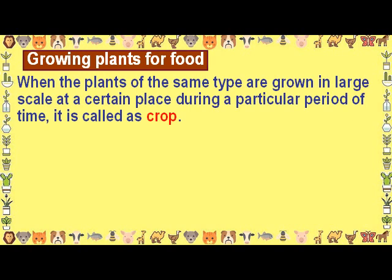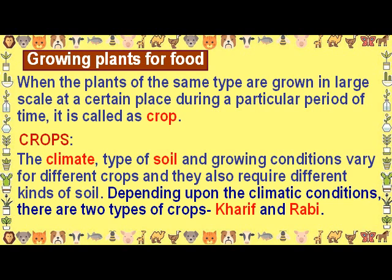Growing Plants for Food. When plants of the same type are grown on a large scale at a certain place during a particular period of time, it is called a crop. The climate, type of soil and growing conditions vary for different crops. Depending upon the climate conditions, there are two types of crops: Kharif and Rabi.